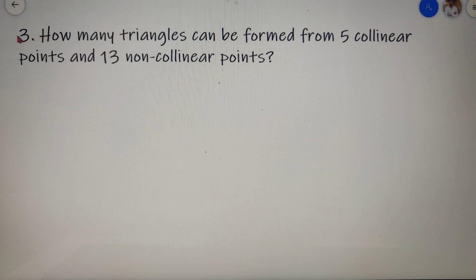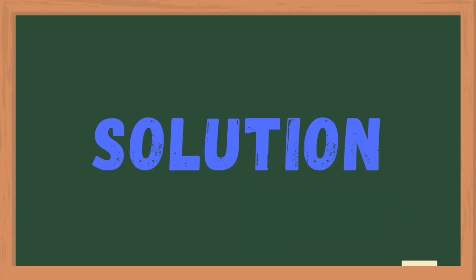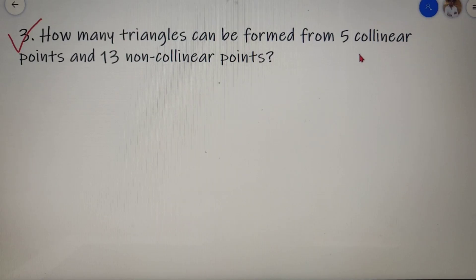So moving on to our third and final question, it says that how many triangles can be formed from 5 collinear points and 13 non-collinear points. So basically collinear points are those that lie on a straight line, and non-collinear points are those which do not lie on a straight line. So for forming a triangle we require 3 points, and the only restriction that we have over here is that all the 3 points should not be collinear points.